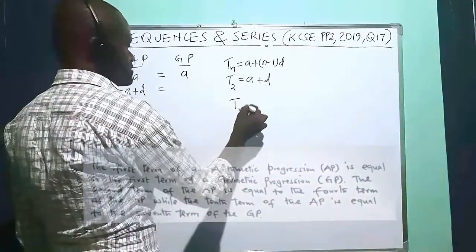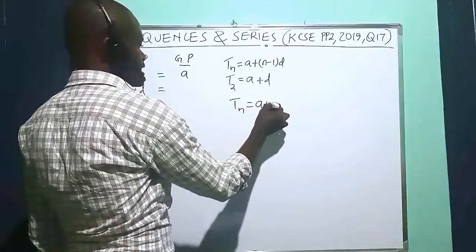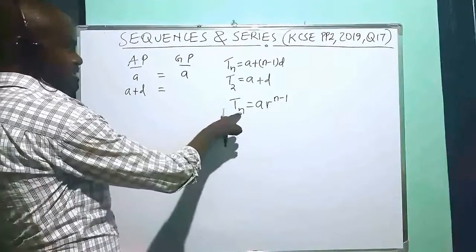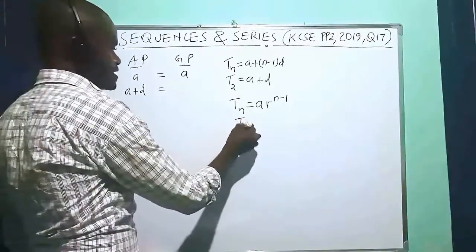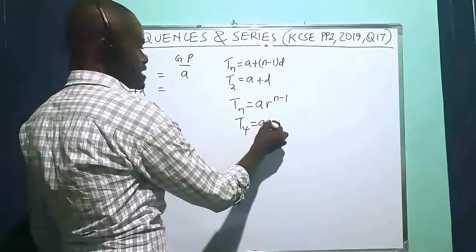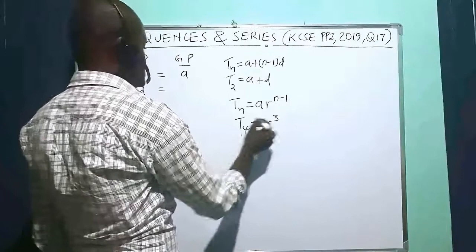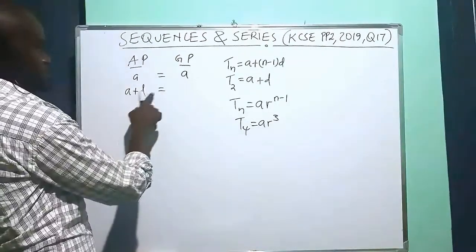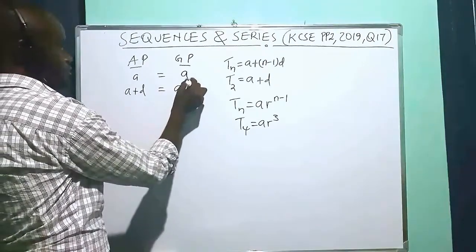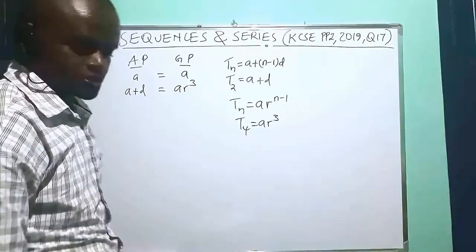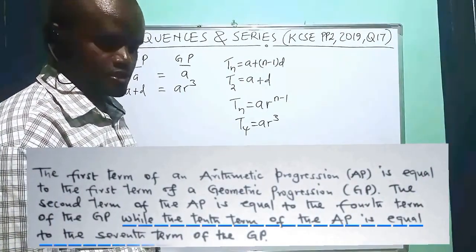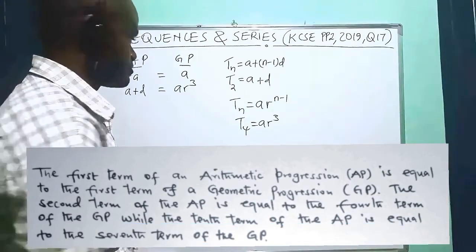For a GP, the nth term is given by A·R^(N−1). For the fourth term, N is 4, so the fourth term is A·R^(4−1) = A·R³. So the first equation is: A + D = A·R³. The question also states that the tenth term of the AP is equal to the seventh term of the GP.